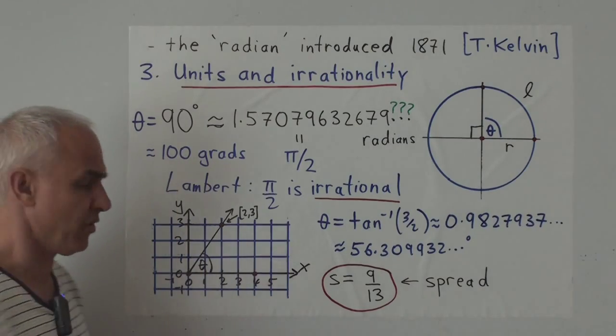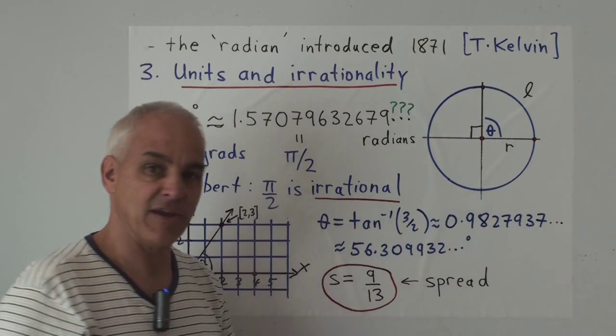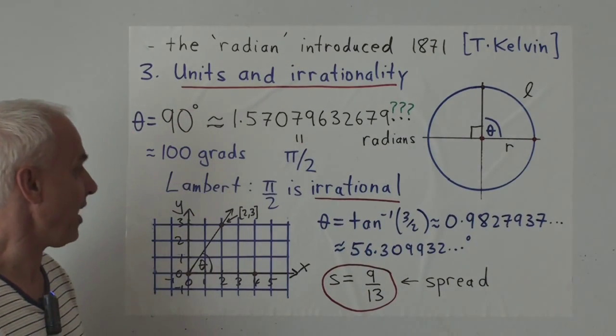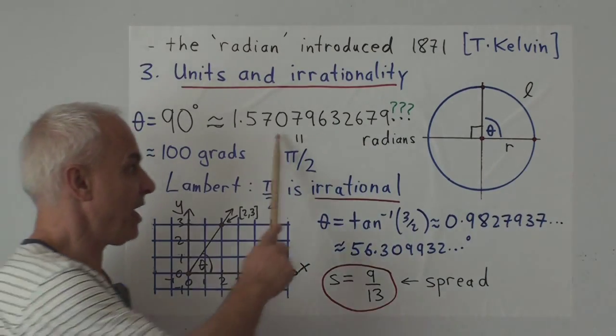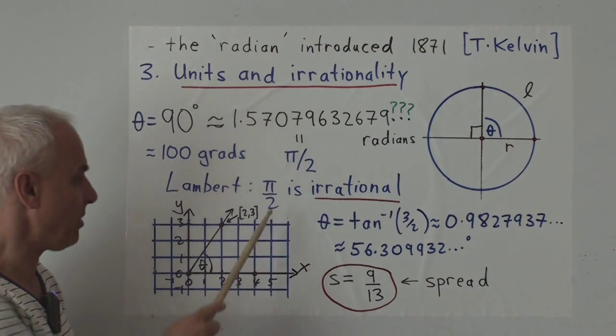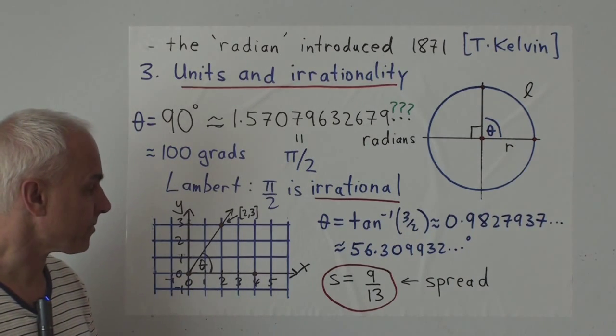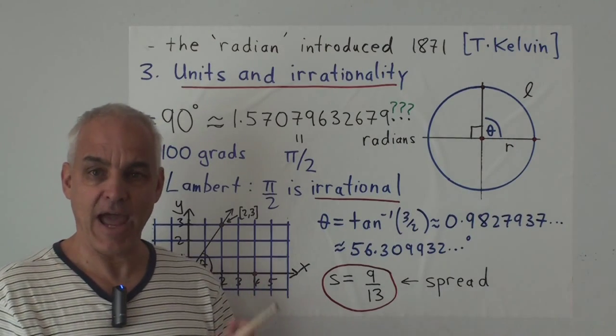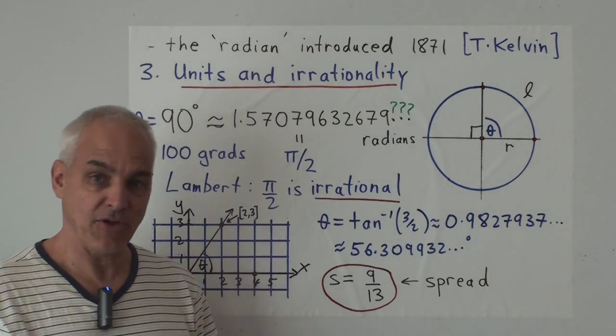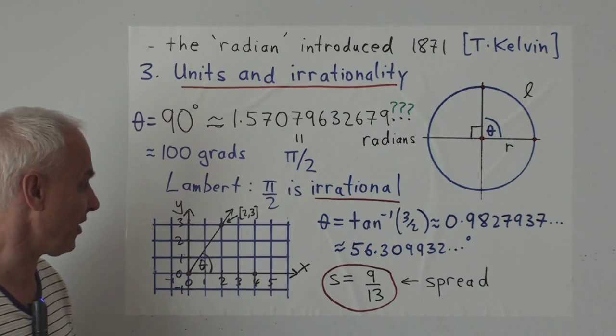In Europe there's another alternative system which is sometimes used. Sometimes 90 degrees is referred to as 100 grads. The number π/2 is an irrational number. Otherwise it would have a repeating decimal. This was established by Lambert, a contemporary of Euler, in the 18th century. And many standard angles have this property that they are in fact irrational numbers. So they're very hard to get hold of with our usual framework of arithmetic.